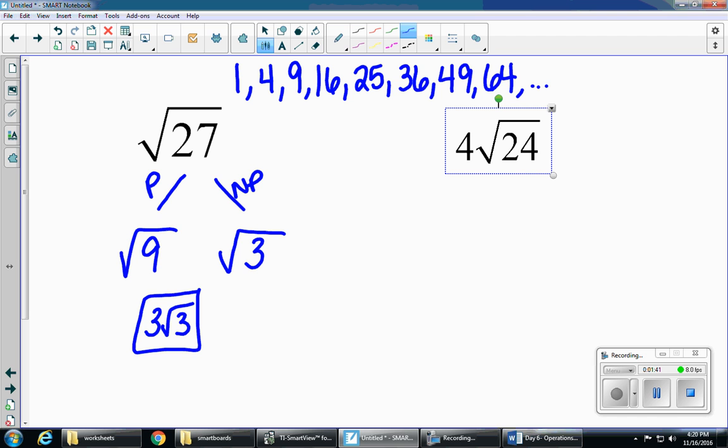Let's take a look at example two: four radical 24. Same thing, except here I have a four on the outside, so I'm gonna do the same thing. I need a perfect and I need a non-perfect, so I'm looking at that list above: one, four, nine, sixteen, twenty-five, thirty-six, and so on.